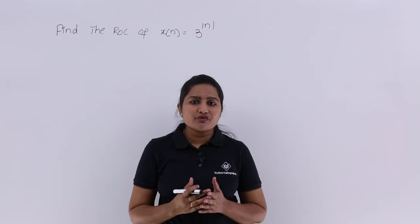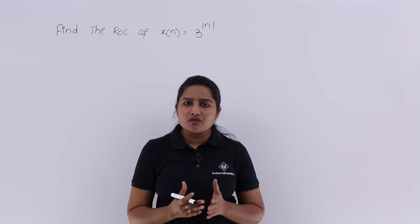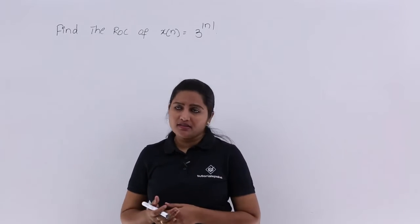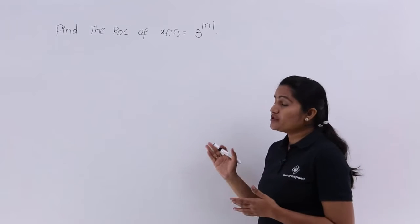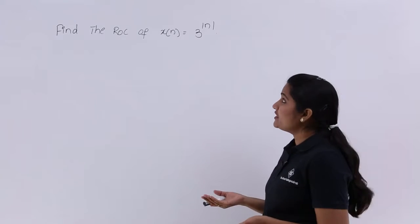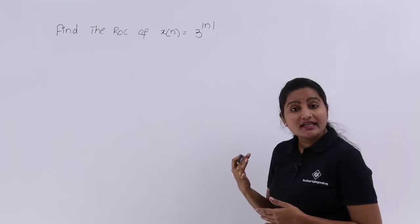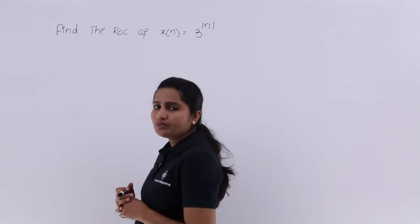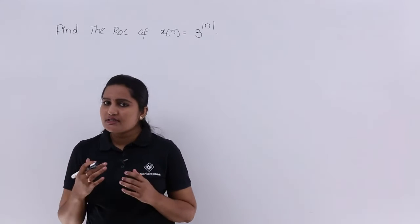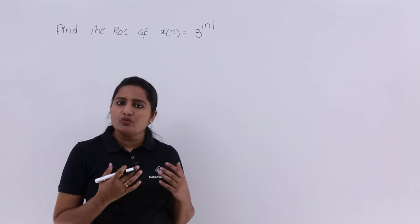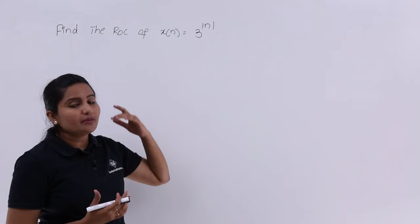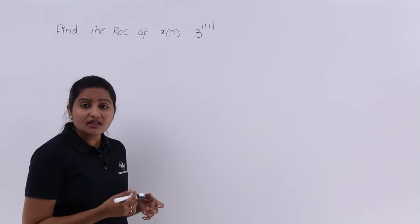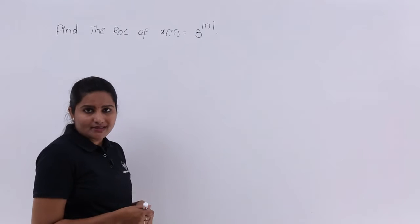In this video we are going to discuss the ROC of a special signal. We need to find the ROC of x(n) = 3^|n|. First of all we need to discuss what is meant by 3^|n|, what is the meaning of 3^|n|.